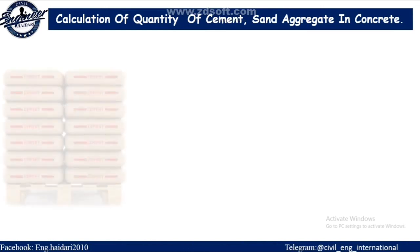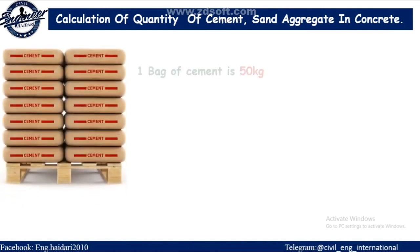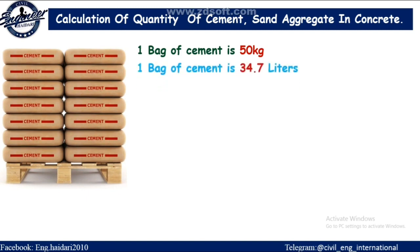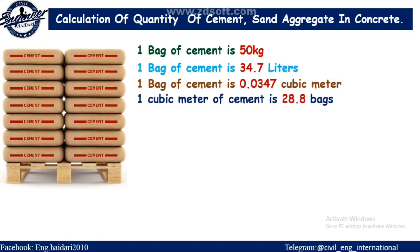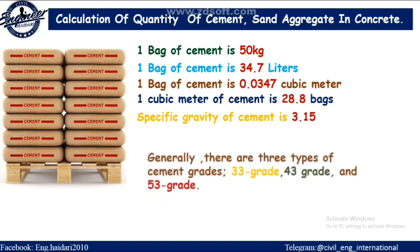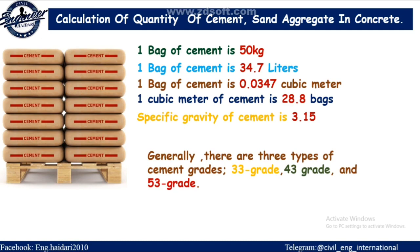One bag of cement is 50 kg. One bag of cement is 34.7 liters, or 0.0347 cubic meters. One cubic meter of cement equals 28.8 bags. Specific gravity of cement is 3.15. Generally there are three types of cement grades: 33 grade, 43 grade, and 53 grade.